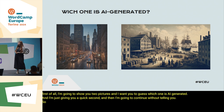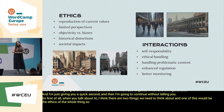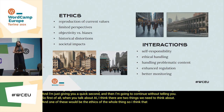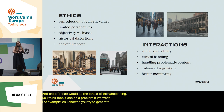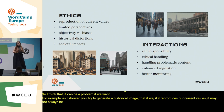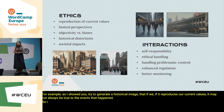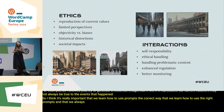When you talk about AI I think there are two things we need to think about, and one of them is the ethics of the whole thing. It can be a problem if we try to generate a historical image and it reproduces our current values — it may not always be true to the events that happened. So it's really important that we learn how to use prompts the correct way and that we always cross-reference whether things are accurate.